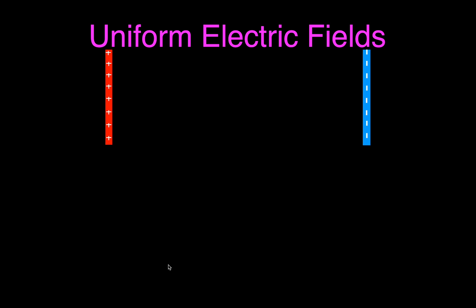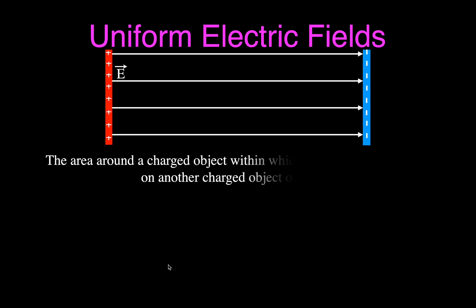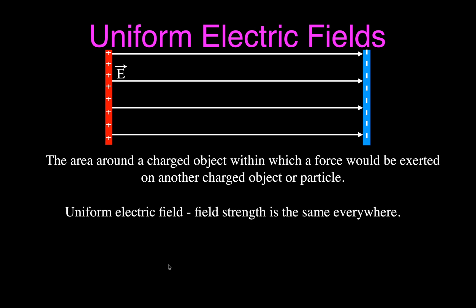Uniform electric fields are fields that exist between charged parallel plates. When we have charged parallel plates, between those plates we have an electric field, and the electric field always goes from the positive to the negative plate. The field strength is everywhere the same, and you can see that the field lines are equally spaced — that's an indication that the field between those plates is uniform.